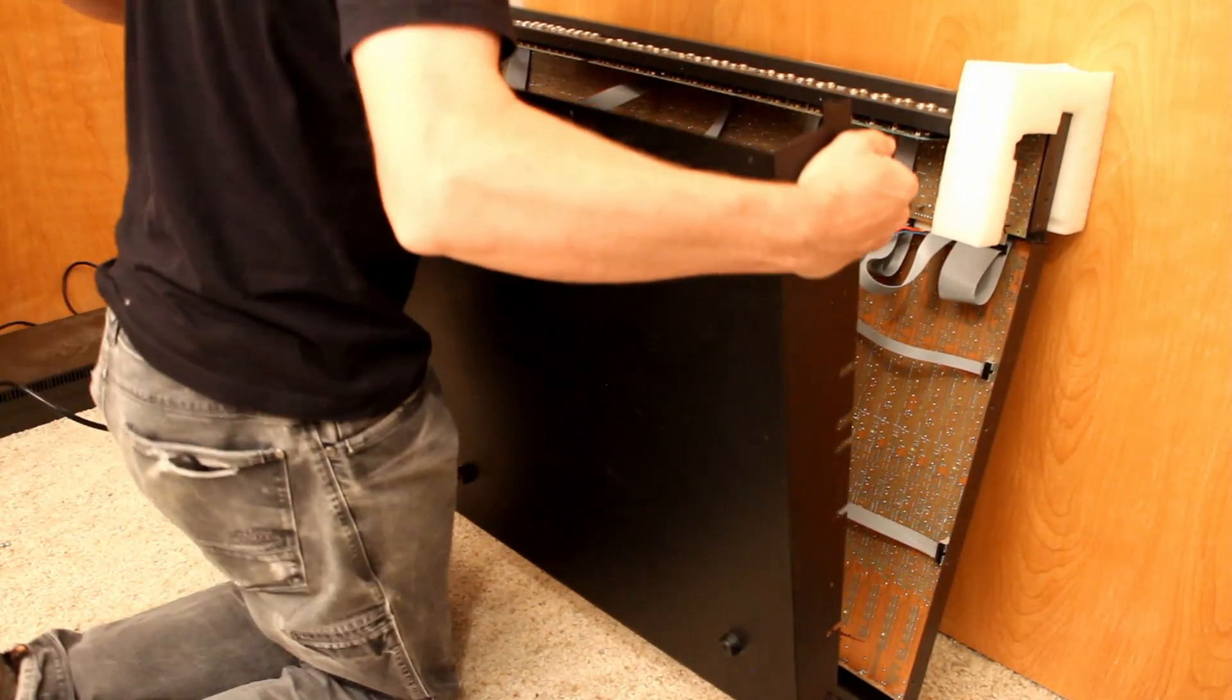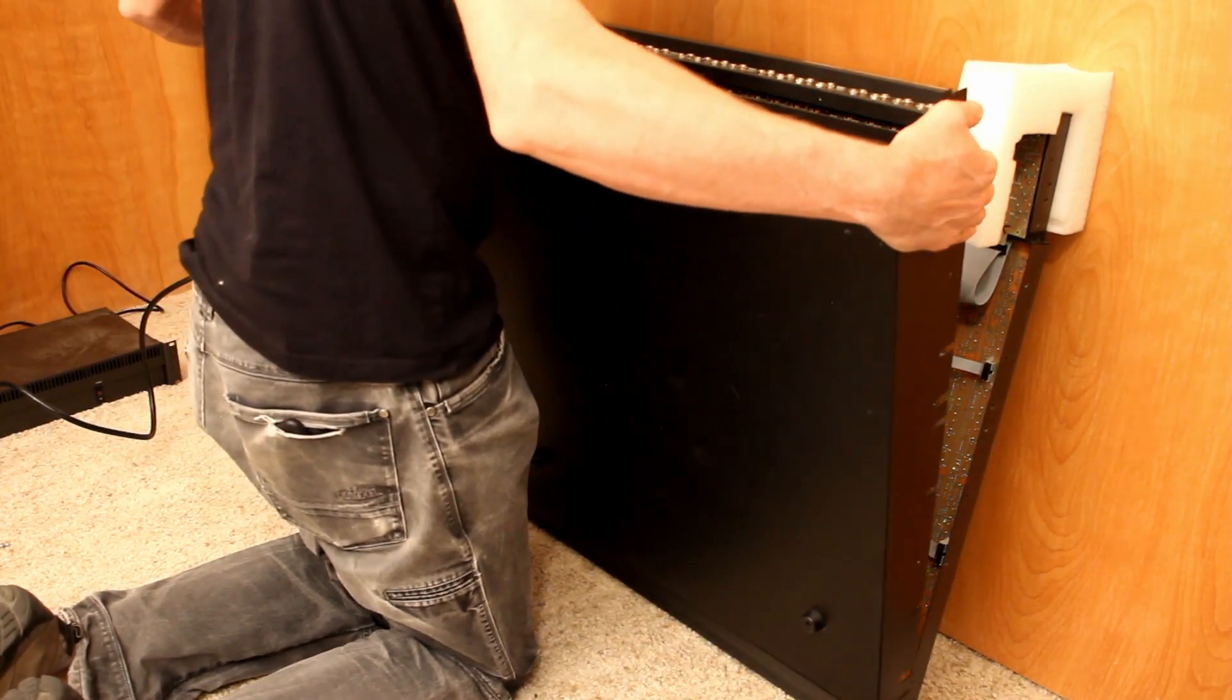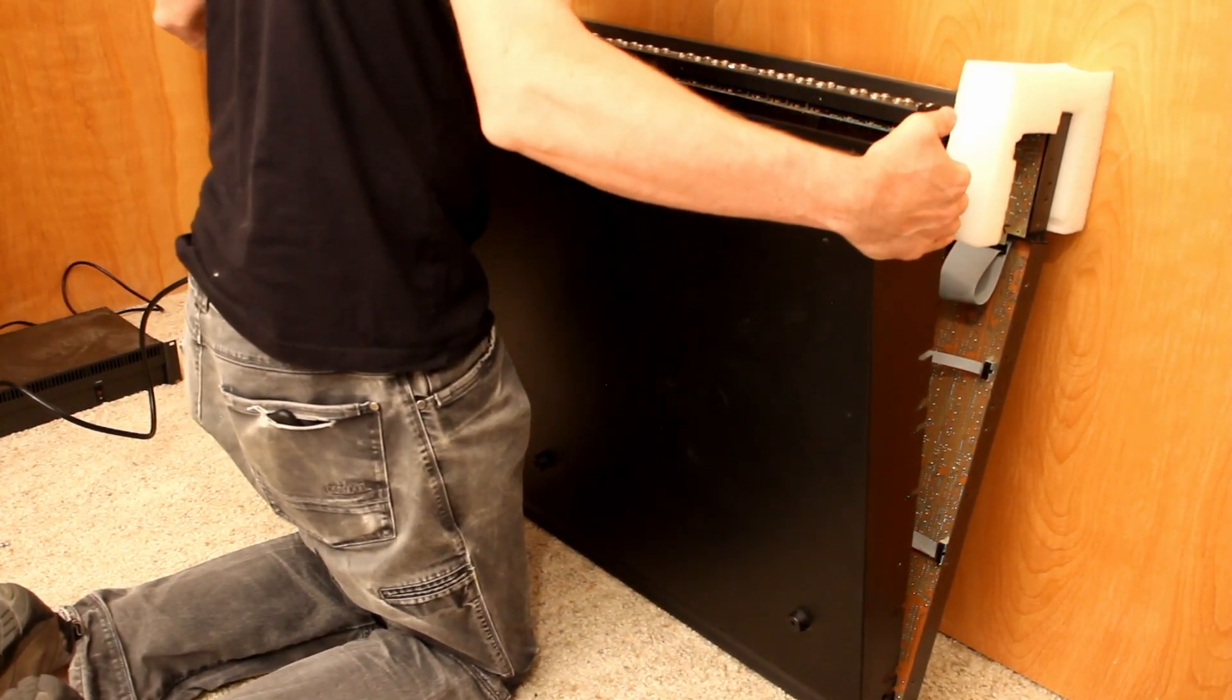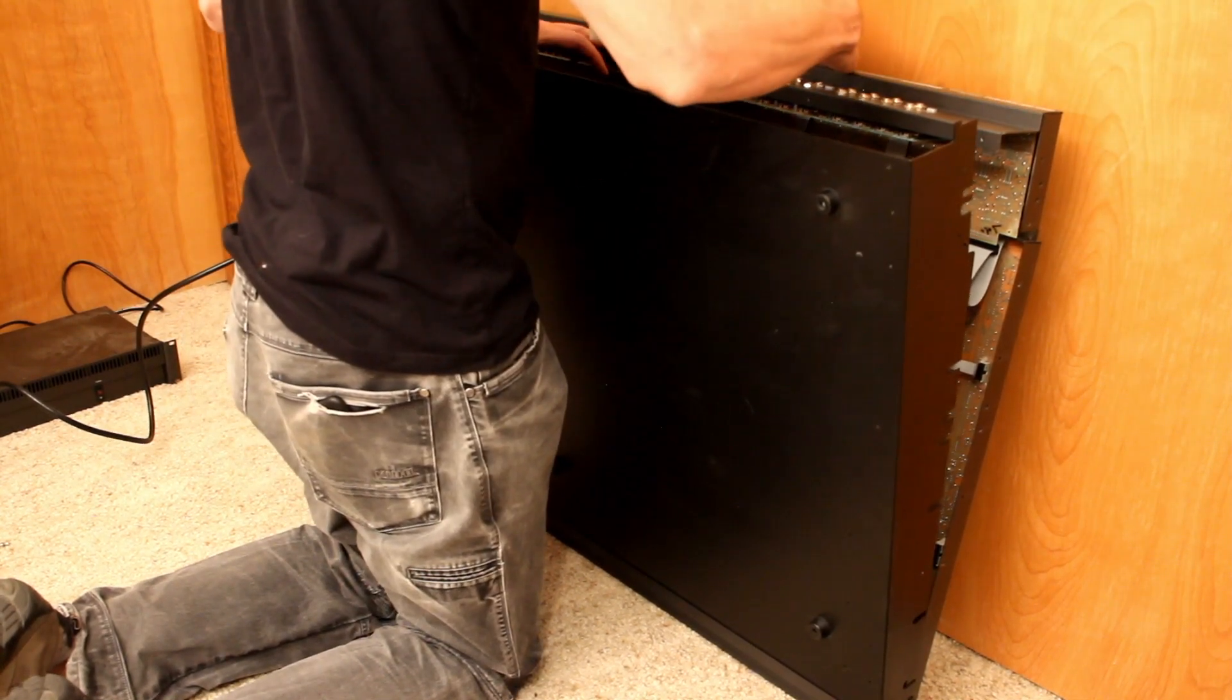And seal her back up, which is just repeating what we did at the beginning in reverse. Ten small Phillips head screws on the bottom. Five up top, five down below. Four on each side.